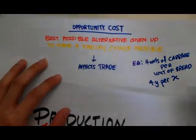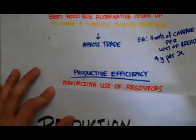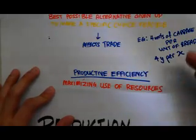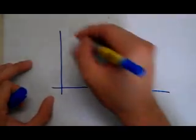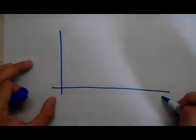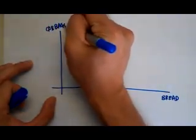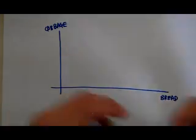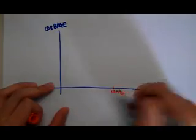Now, with the concept of opportunity cost in mind, we can talk about being productively efficient. To be productively efficient, it means that you have maximized the use of your resources. This is best explained with a graph. Imagine we're still in Singapore and there's only one mode of production, which is labor. Let the X-axis be bread and the Y-axis be cabbage.